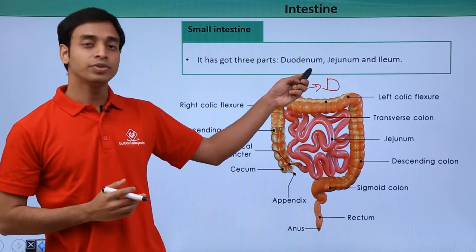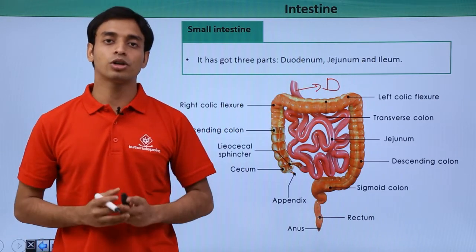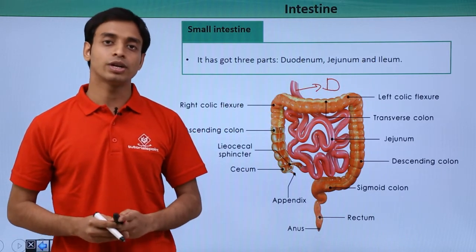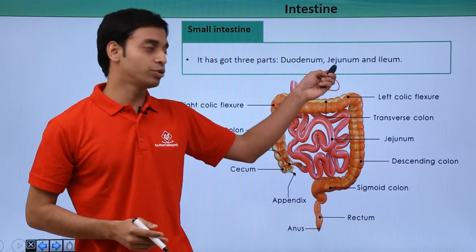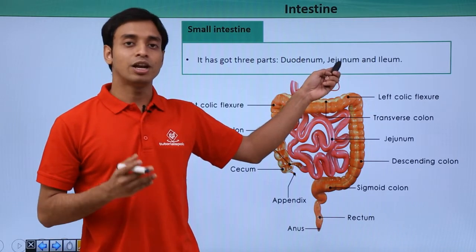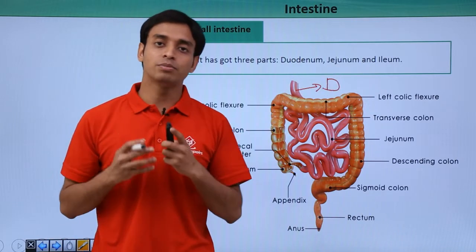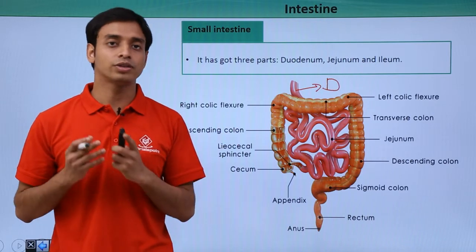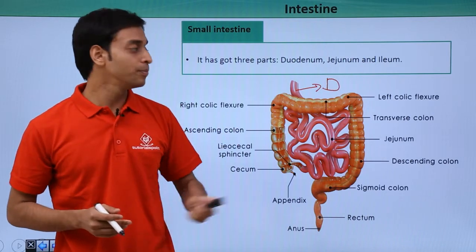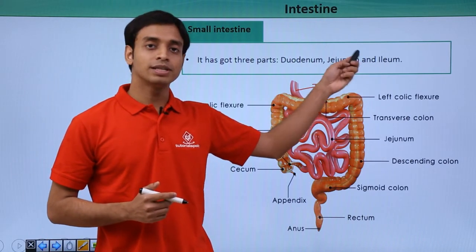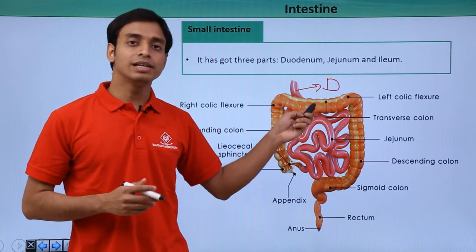After the duodenum is the middlemost portion of the small intestine, which is known as the jejunum. After the jejunum, the longest and most highly coiled part of the small intestine is called the ileum.